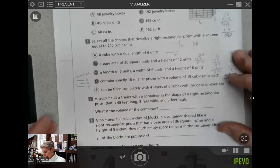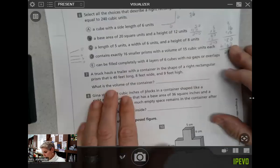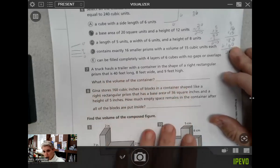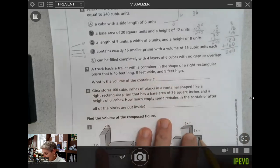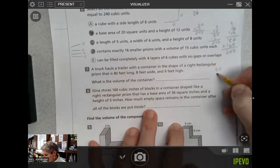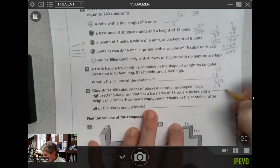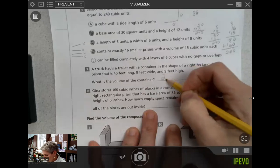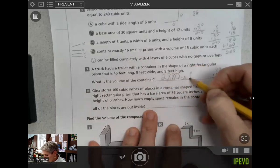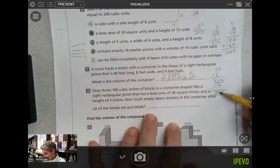A truck hauls a trailer with a container in the shape of a right rectangular prism, 40 feet long, eight feet wide, nine feet high. What is the volume of the container? I have my length and width and height. I can do 40 times eight, gives me 320 times nine, 2,880 cubic feet. Checking my work a little bit there.